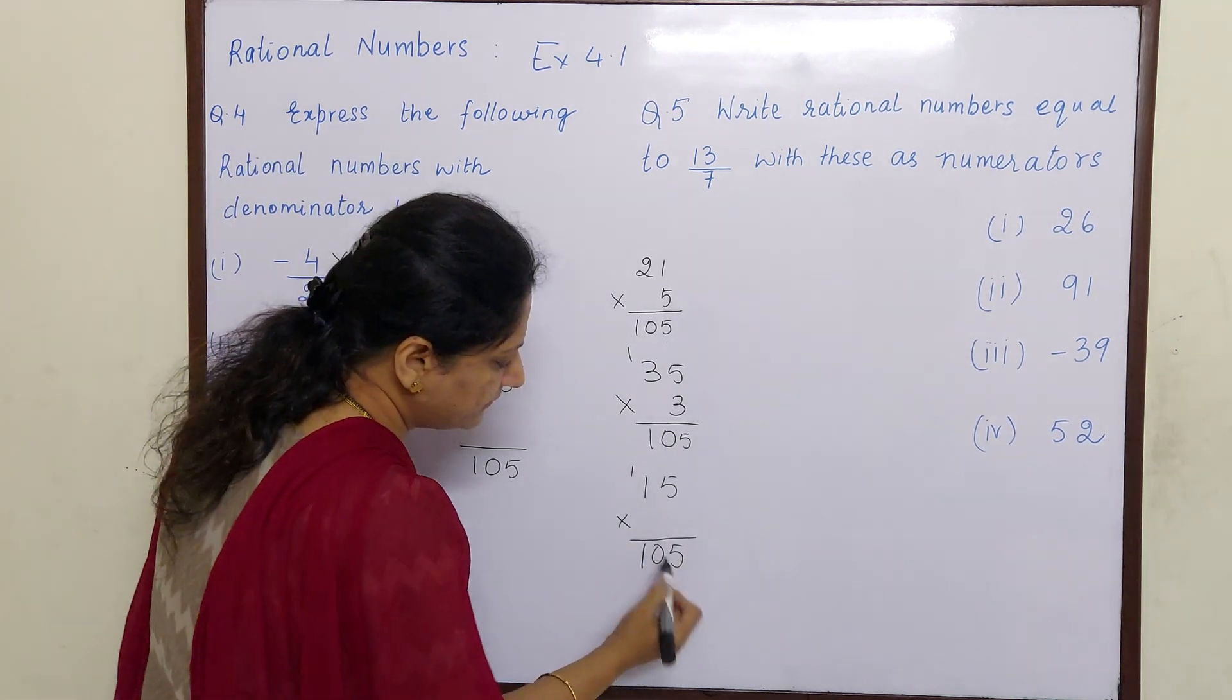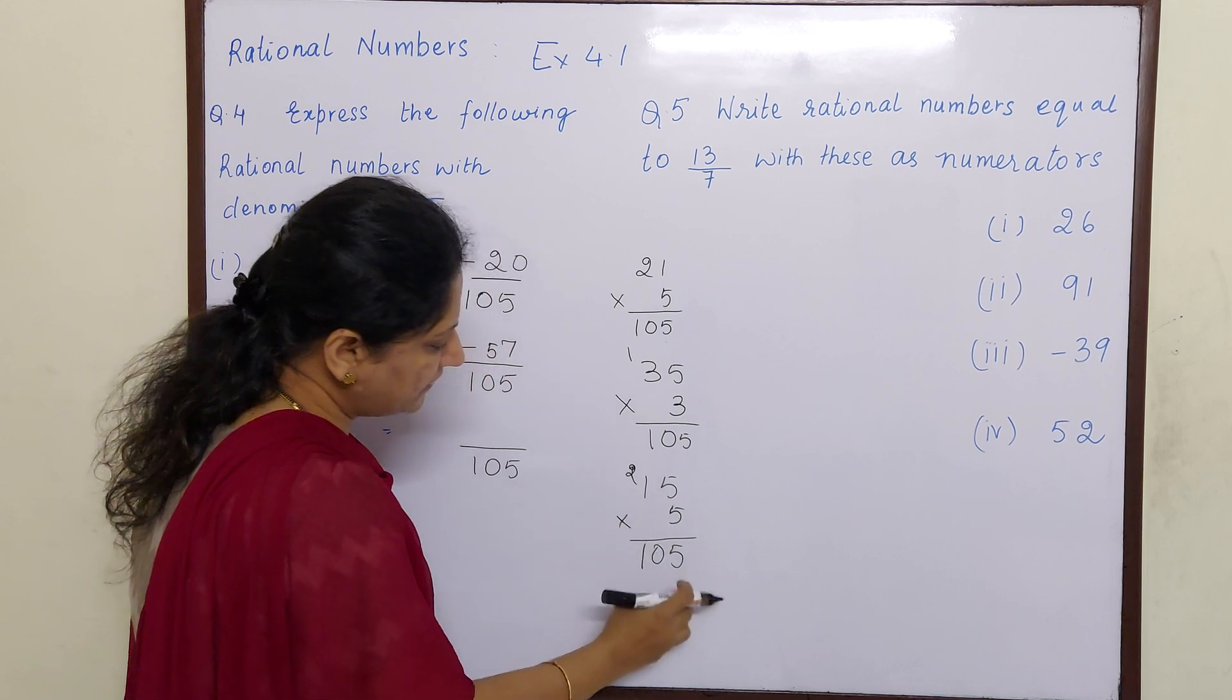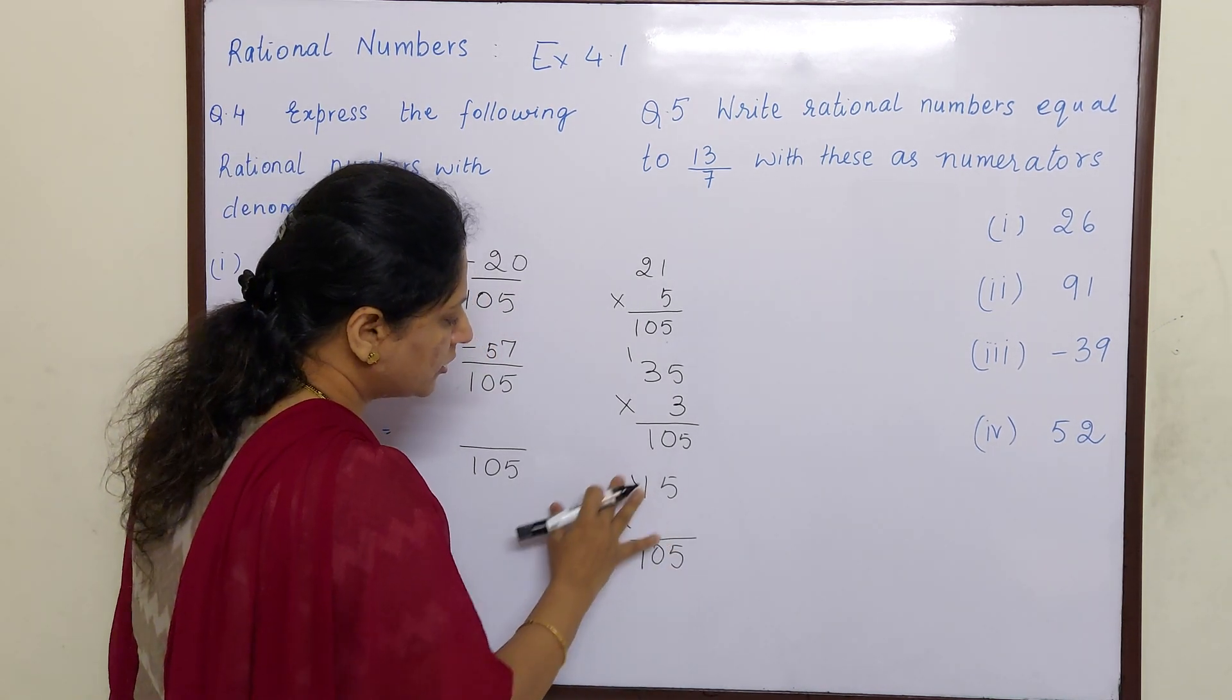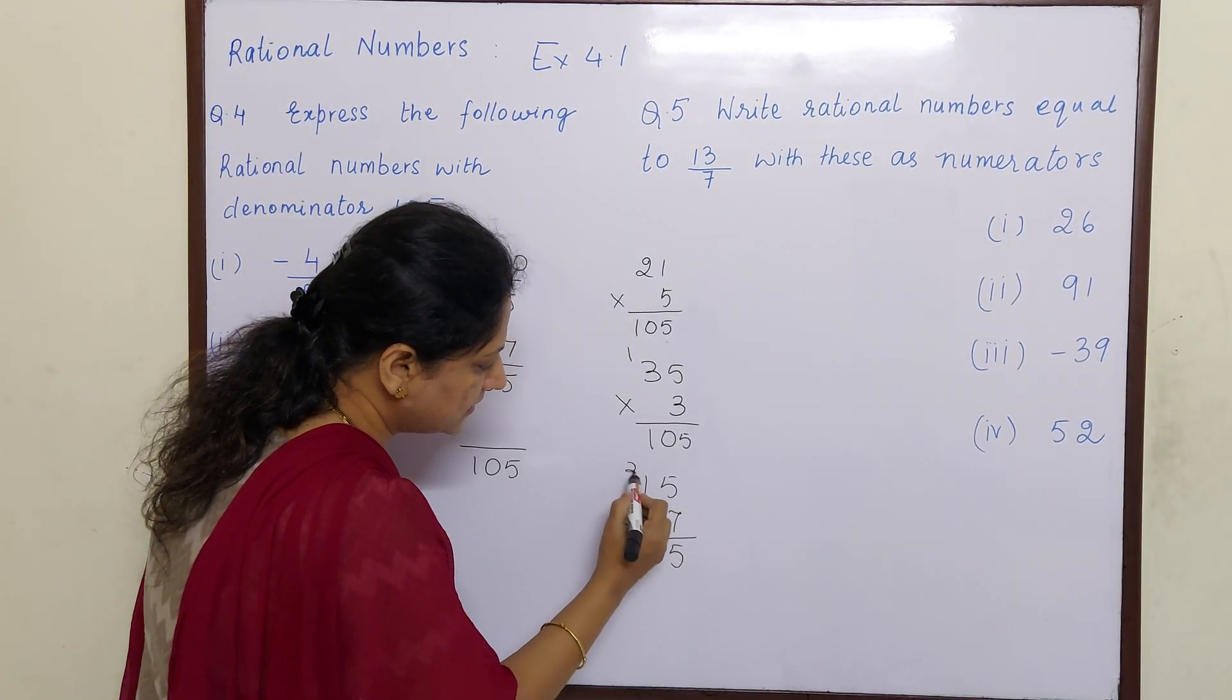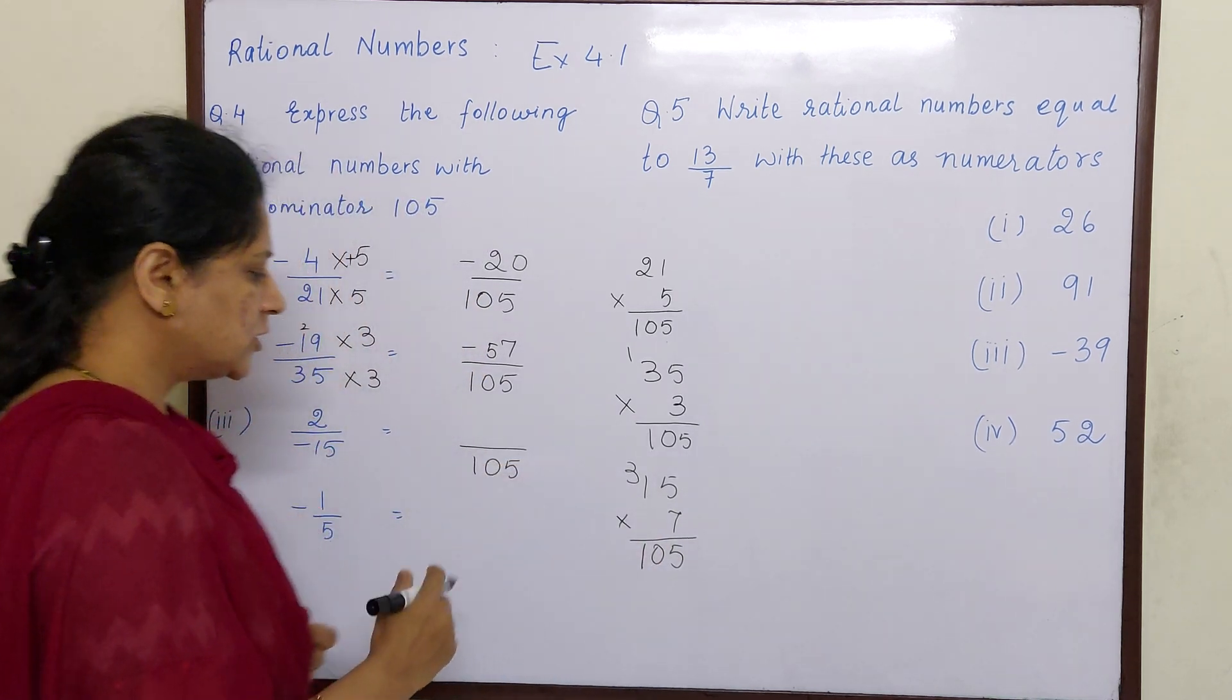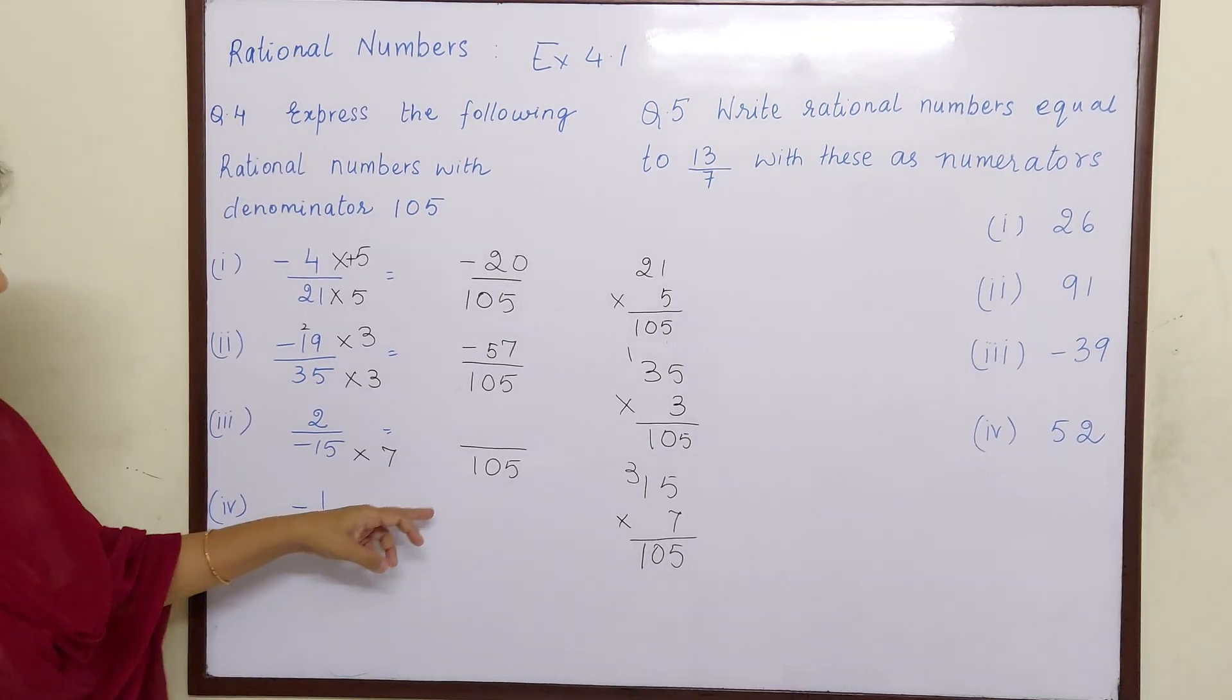Then 5 fives are 25, in the end we will get 5. So 5 fives are 25, 5 ones are 5 plus 2, 7, no. So 5 is also not an option. Next is 7 fives are 35, so 7 fives are 35, 7 ones are 7 plus 3, 10. So minus 15 into 7 is 105.